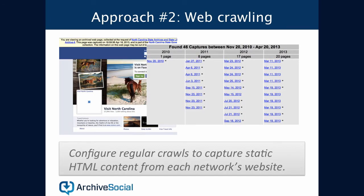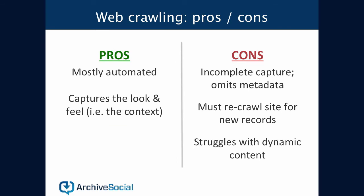A better long-term approach is to use automated technology such as web crawling. Web crawling is technology that has existed for several years and it works by capturing the content off of a website and following the various links on that website to capture the entire site. Vendors that provide web crawling and web archiving technology are now supporting social media by allowing you to point their solutions at websites such as twitter.com and facebook.com. The benefit of web crawling is that it's mostly automated and it actually preserves the look and feel of your social media communications exactly as you're used to seeing them on the websites themselves.